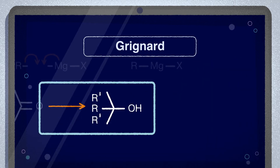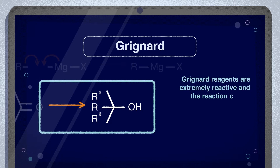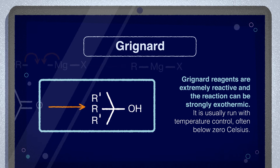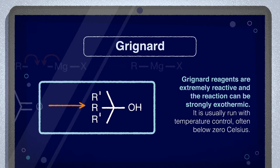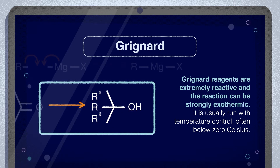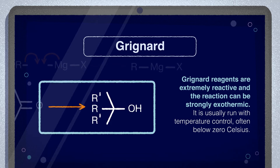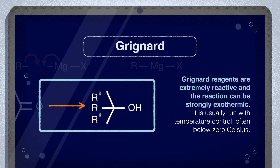Grignard reagents are extremely reactive and the reaction can be strongly exothermic. It is usually run with temperature control, often below zero Celsius. THF, toluene, or ethers are commonly used solvents. Grignard reagents react with water to give the corresponding alkane, so extra dry conditions are necessary.